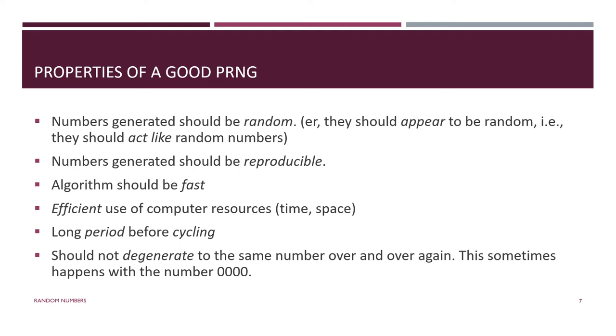Clearly, we want it to be reproducible, especially in simulation, because one of the wonderful things about using random numbers in simulation is that we can do the same thing over and over again by using the same random number stream starting with the same seed. It's definitely critical for simulation. We want the algorithm to be fast. We want it to work quickly. We don't want to have to wait to get the random numbers. Even a few seconds of a delay gets pretty annoying. We want to make efficient use of computer resources. It's not only time, but it's also space. How much storage space is used by the computer algorithm? Whenever we say efficient in relation to computer resources, we're talking about issues of time and space.